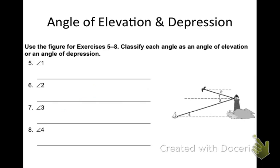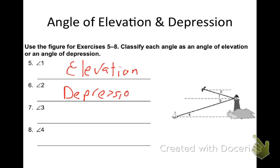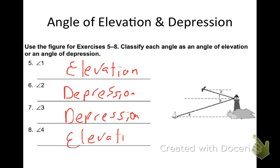Try these four on your own. Use the figure for exercises five to eight — classify each angle as an angle of elevation or an angle of depression. Angle one — elevation. Angle two — depression. Number seven, angle three — that is depression. And number eight, angle four — that is elevation. Nice job. Again, the difference is: are you looking up or are you looking down with respect to that angle?